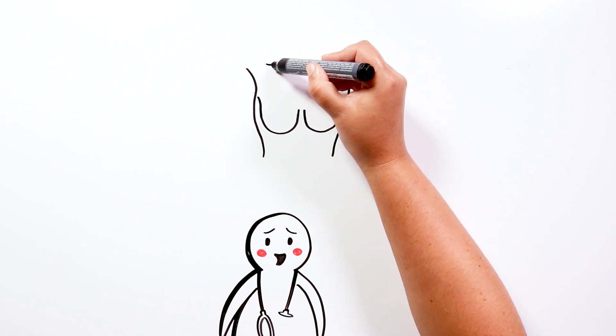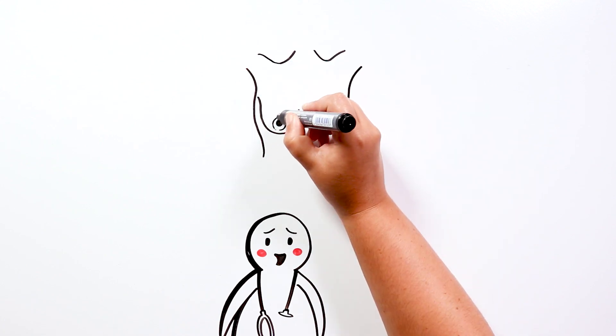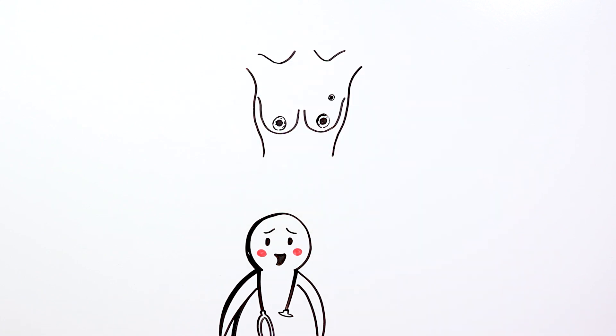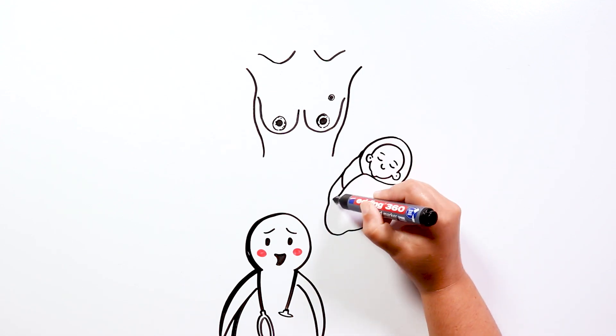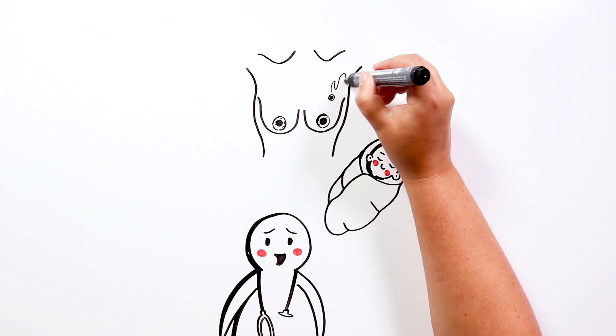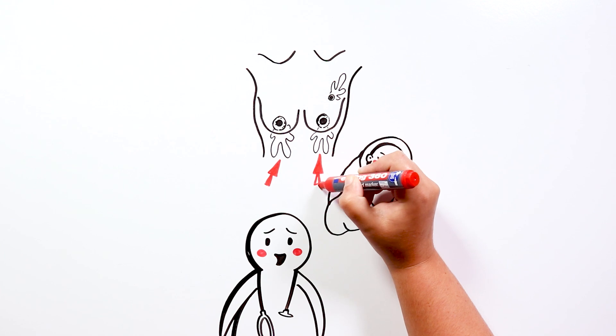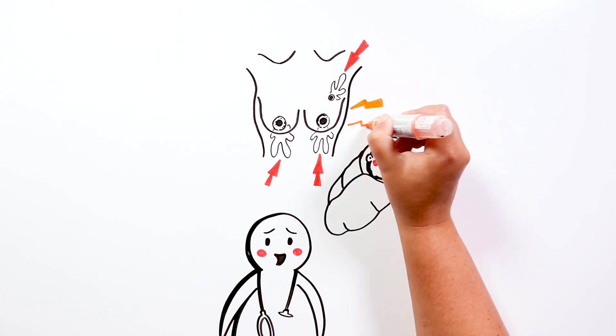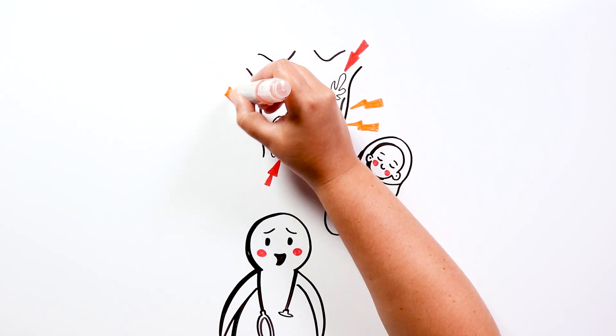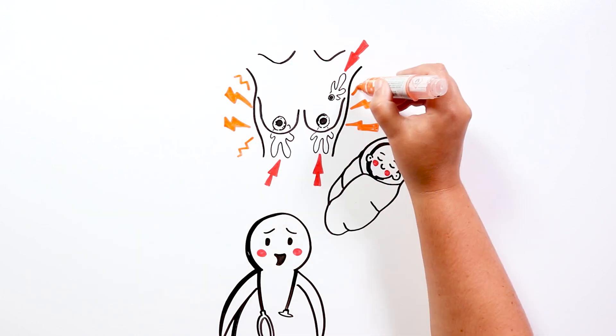In these disorders, the extra nipples are usually smaller and less developed than the regular nipples. However, in the case of polymastia, this doesn't prevent a woman who has given birth, for example, from secreting milk from all her breasts, whether they are more or less small, or that she feels more pain or sensitivity in the area during hormonal changes such as menstruation.